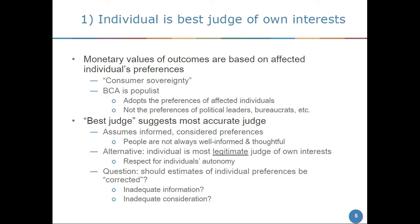The idea of best judge suggests most accurate judge, and we often talk about preferences based on well-informed, well-considered judgments. But we know people are not always well-informed and thoughtful about many choices. An alternative interpretation is not that people are the most accurate judges of their well-being, but at least they're the most legitimate judges — the idea of individual autonomy as an important value. This raises the question: when we think judgments aren't well-informed and reflective, should we adjust those judgments in some way?